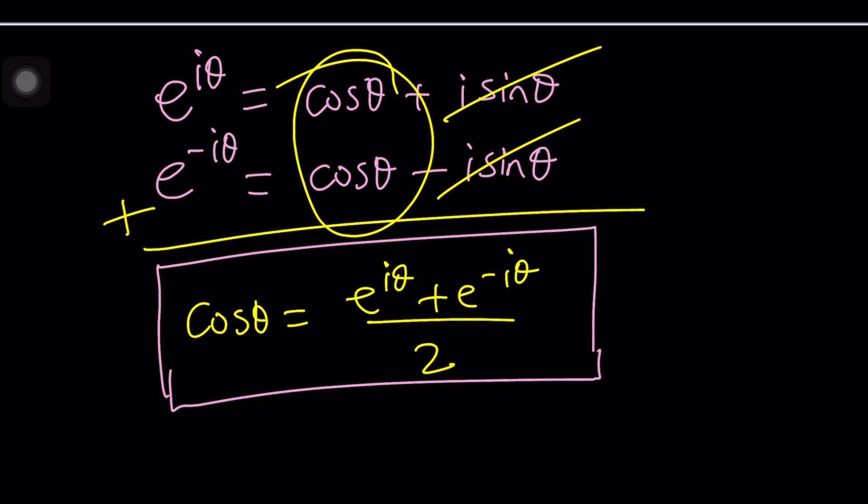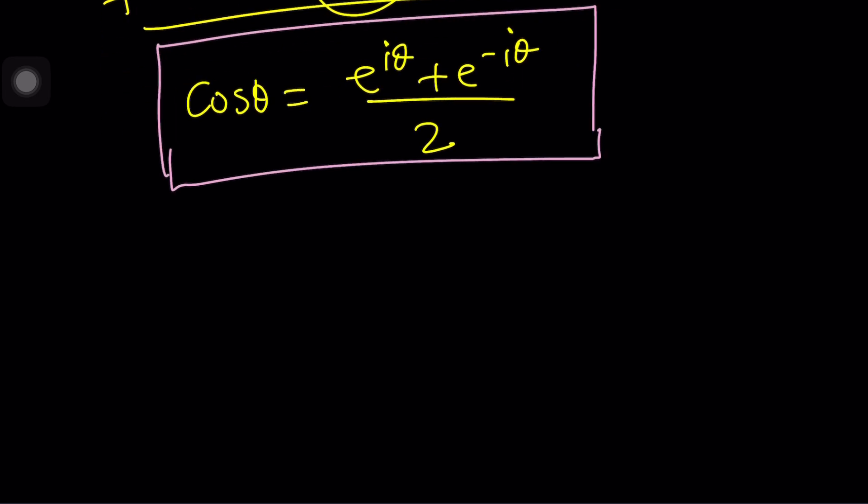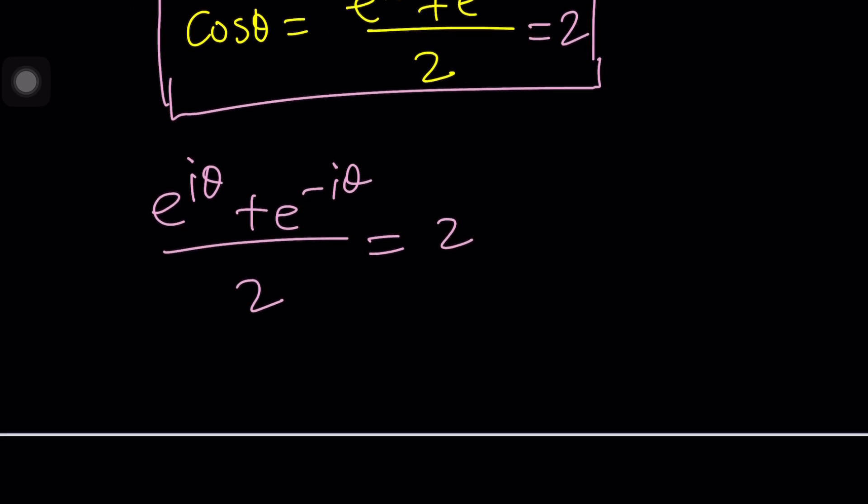Imagine you have an imaginary number. Anyways, that's a different story. So now, let's go ahead and set this equal to two and that'll give us a beautiful equation. Of course, because Euler came up with this. And now we can cross multiply. E to the i theta plus E to the negative i theta equals four.